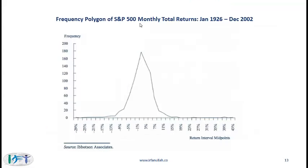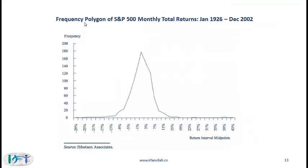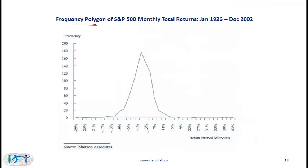A frequency polygon takes the midpoints of the histogram bars and connects those points. If you take each bar of the histogram and plot the midpoint of each interval against its frequency, then connect those midpoints, you get a frequency polygon. The x-axis shows the midpoint of each interval — for the 2% to 4% interval, the midpoint is 3% — and the y-axis shows the frequency, so the 3% midpoint reads off at 180.